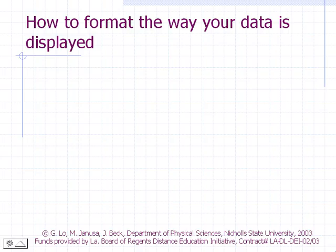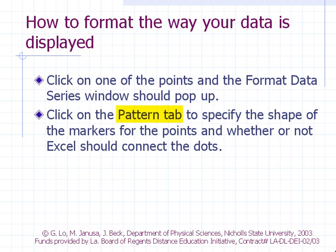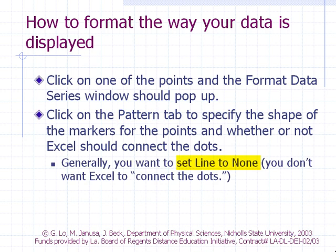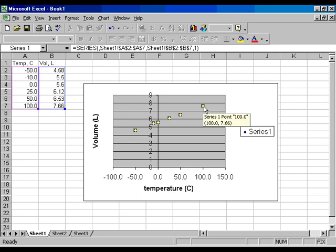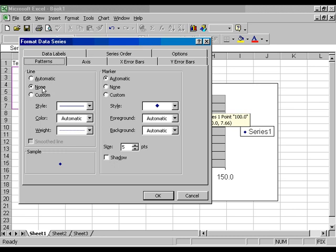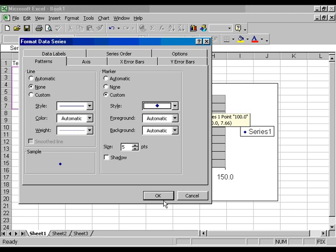How to format the way your data is displayed: Click on one of the points and the Format Data Series window will pop up. Click on the Patterns tab to specify the shape of the markers for the points and whether Excel should connect the dots. Generally you want to set line to 'None' — you don't want Excel to connect the dots. Then click OK.